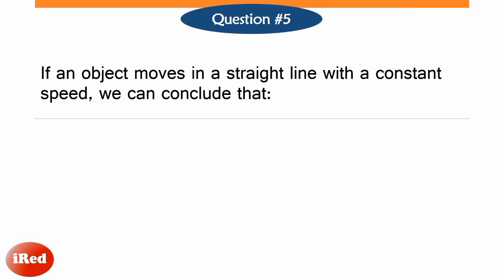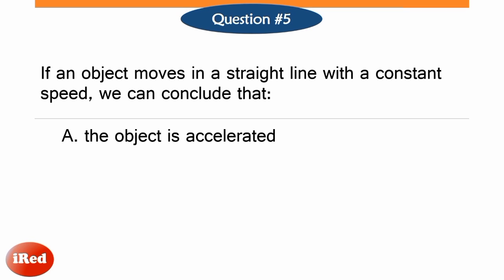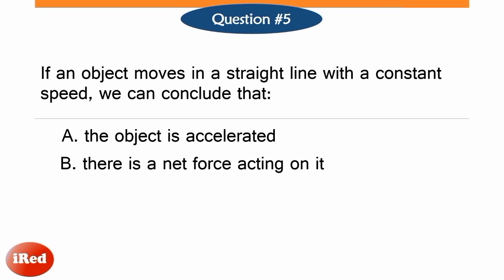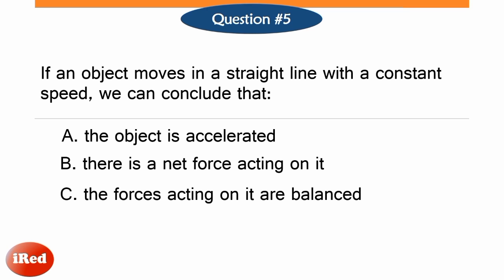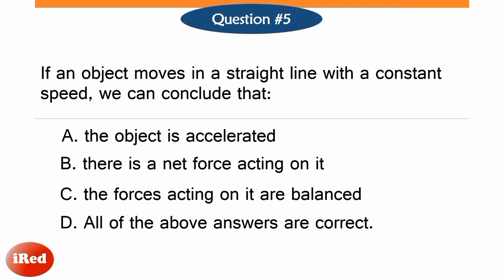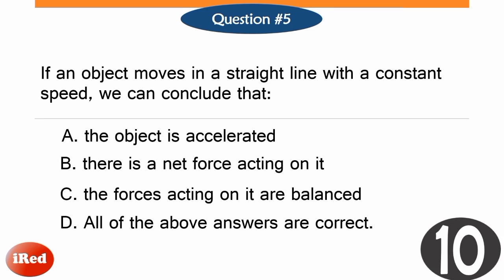If an object moves in a straight line with a constant speed, we can conclude that: letter A, the object is accelerated; letter B, there is a net force acting on it; letter C, the forces acting on it are balanced; or letter D, all of the above answers are correct.